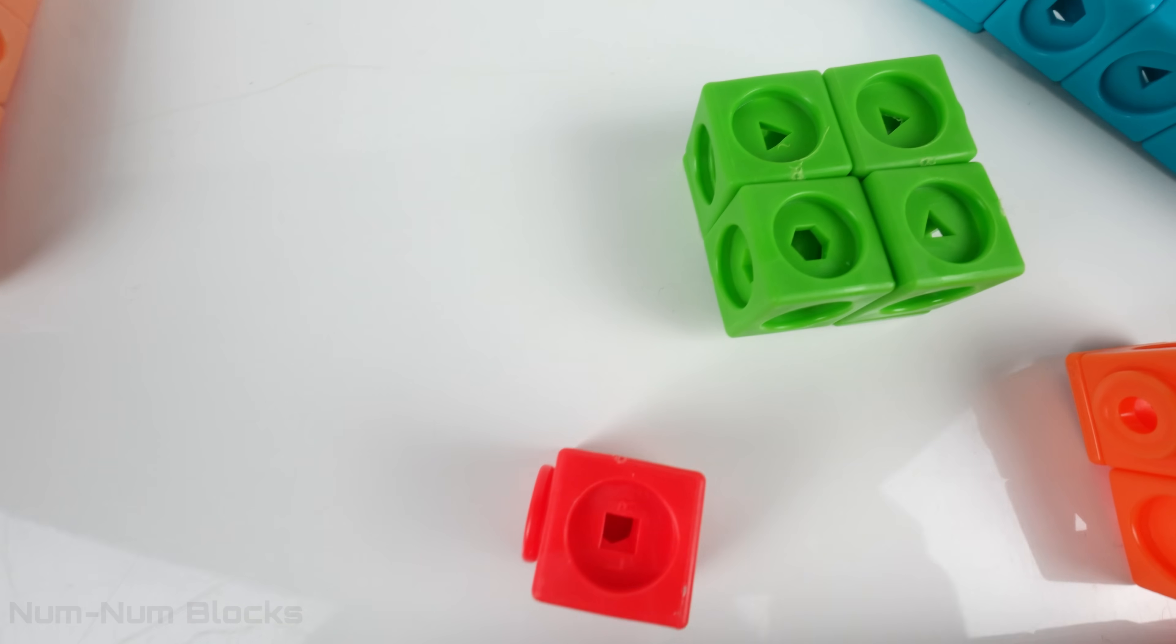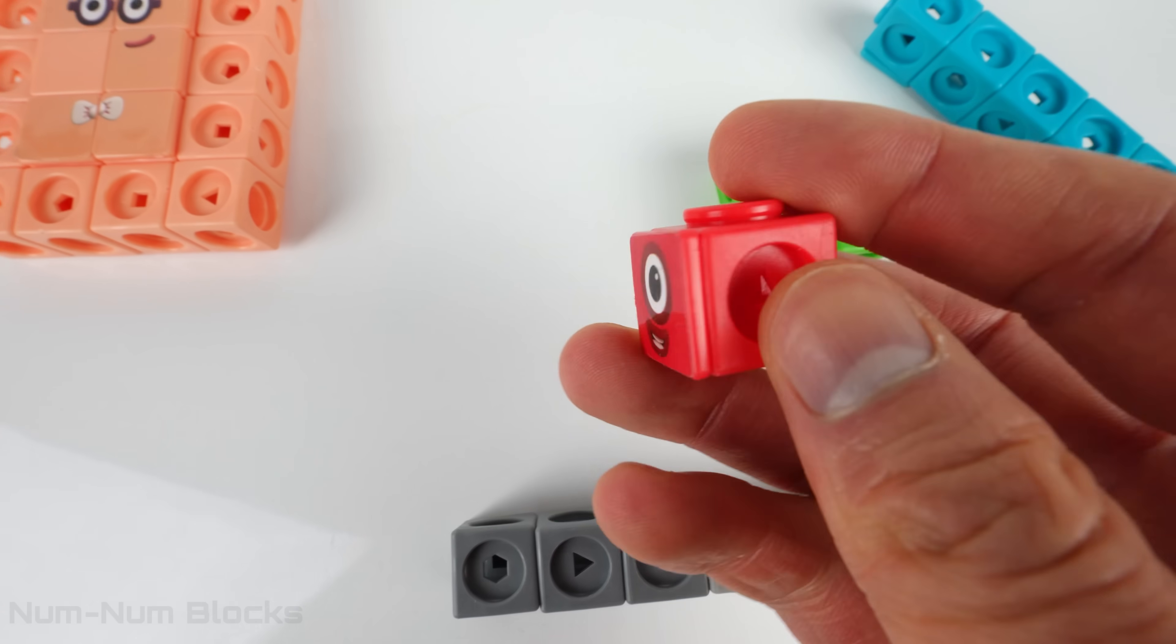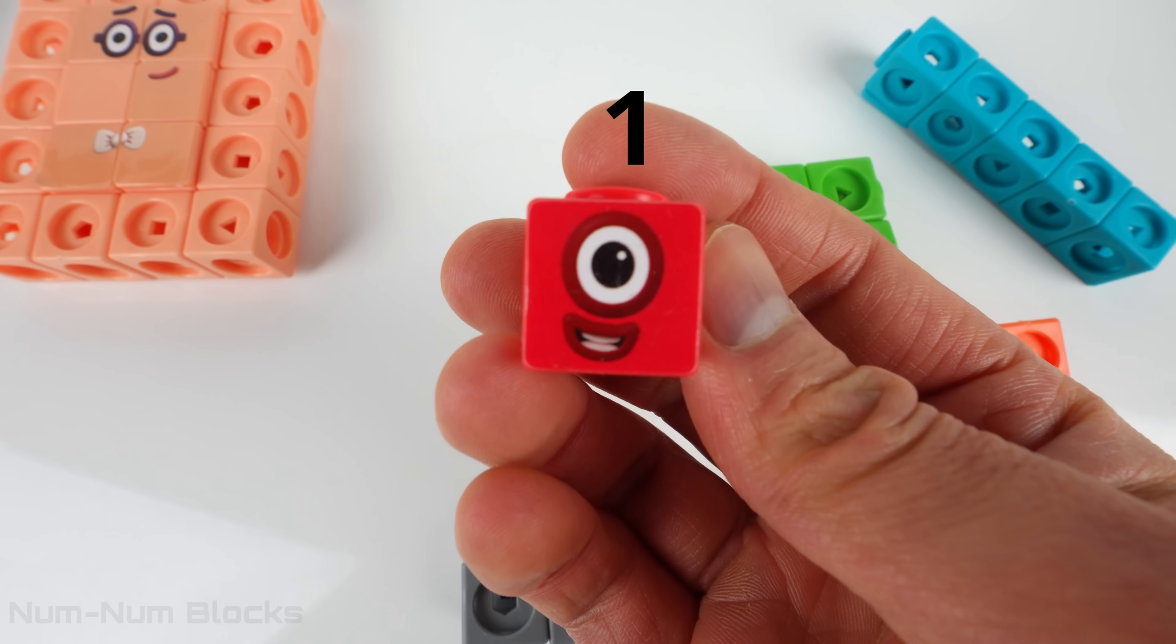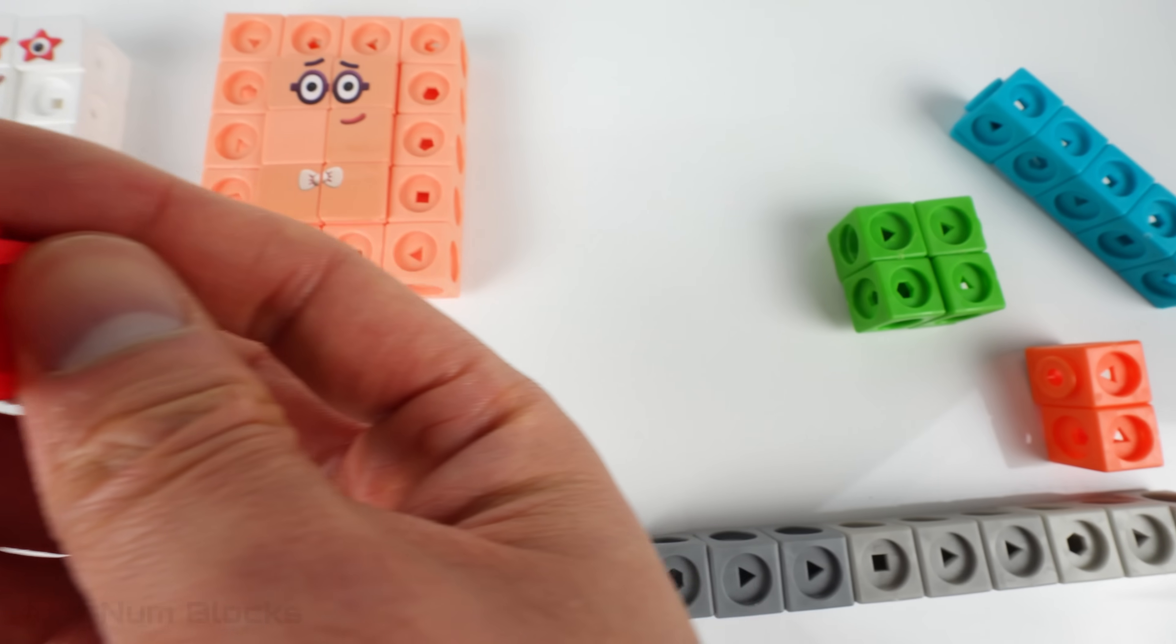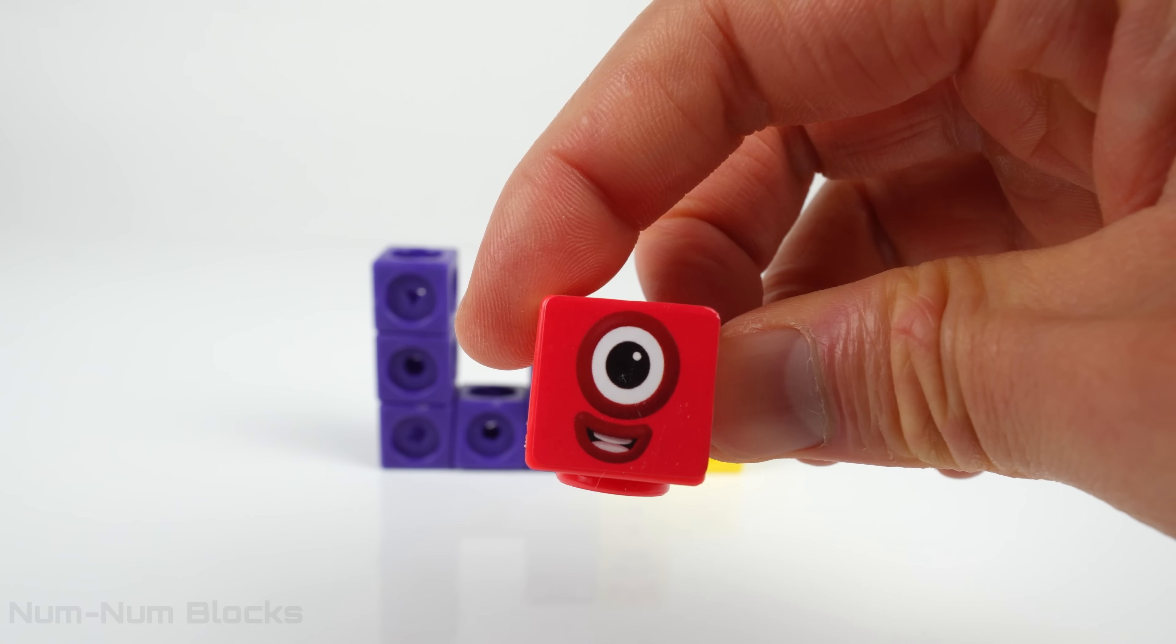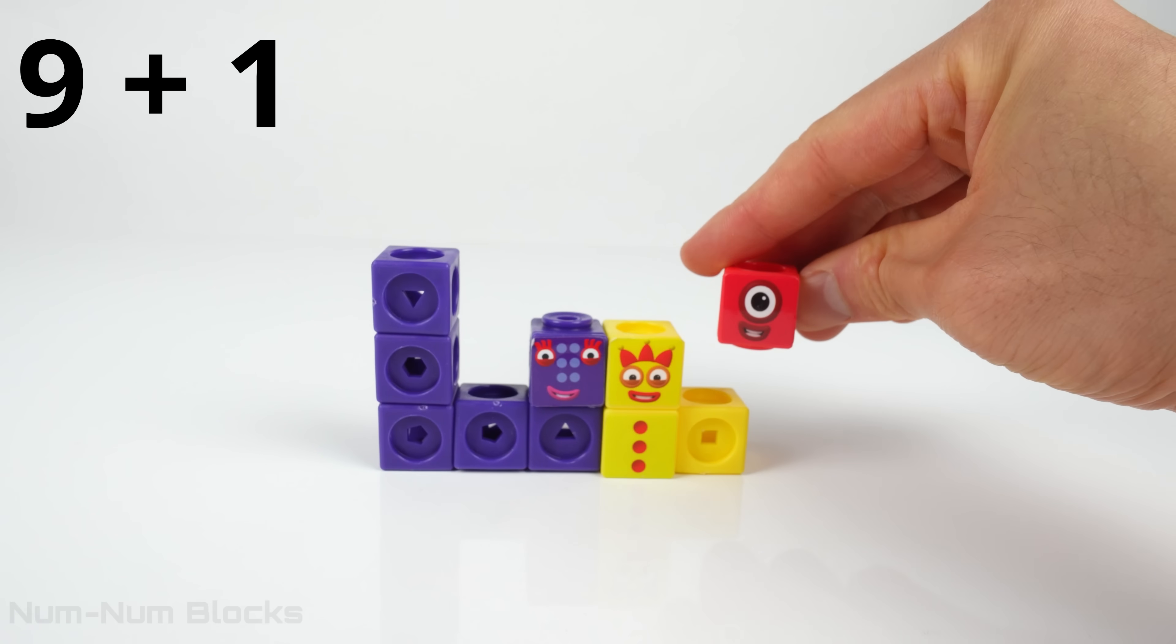Let's pick the red number block. What number is the red number block? 1! If we add 1 to 9, we get 10.